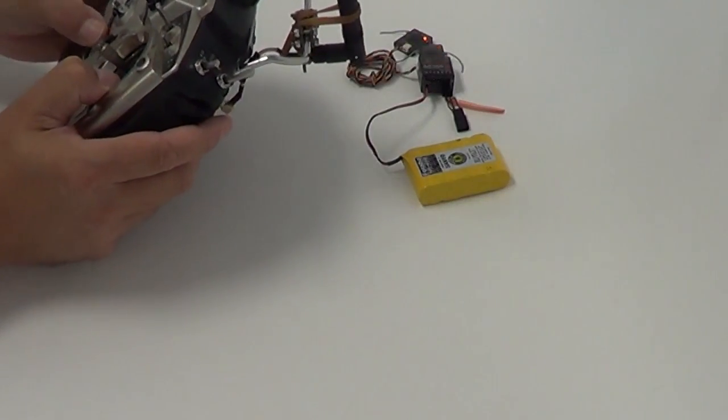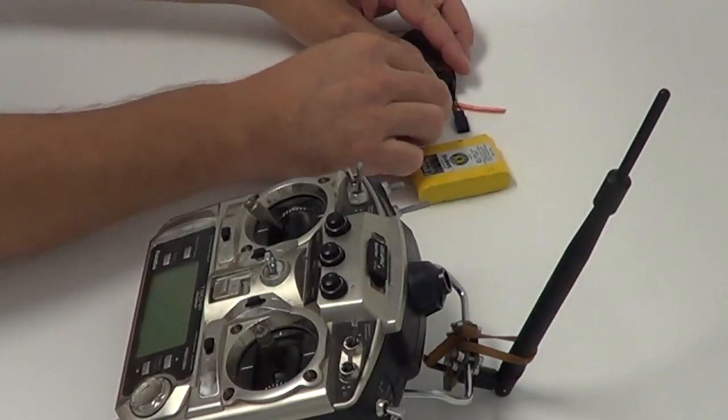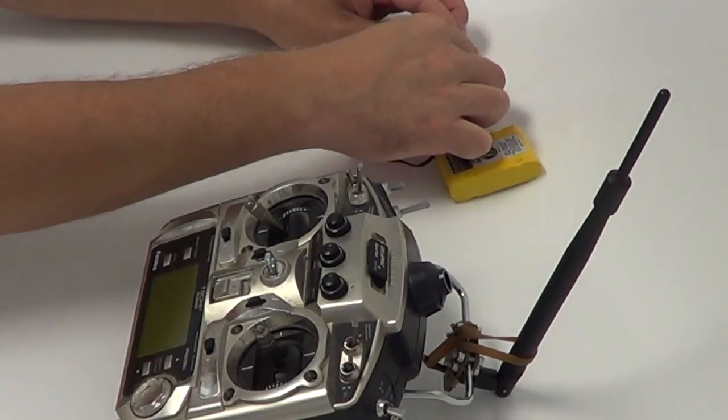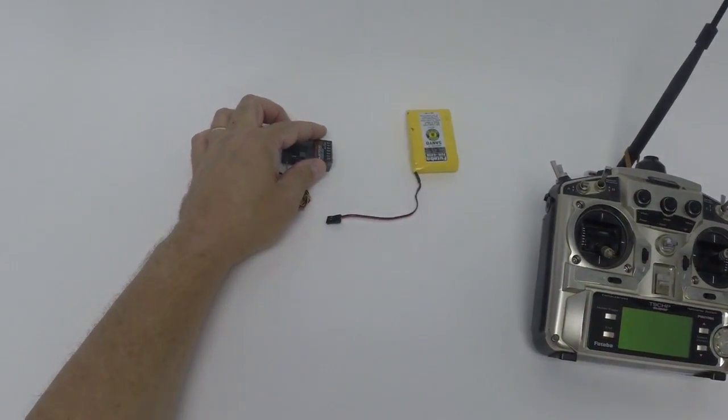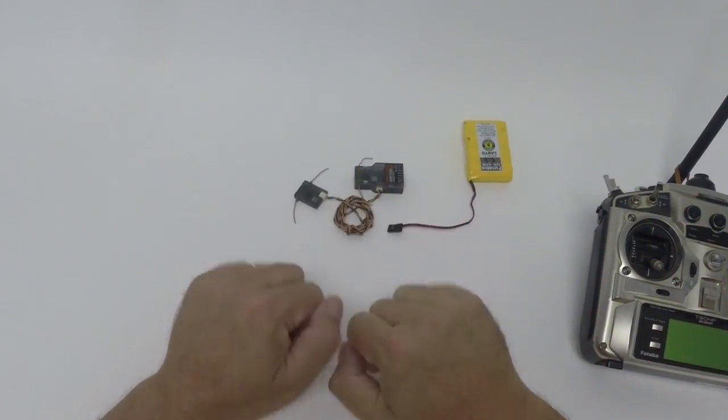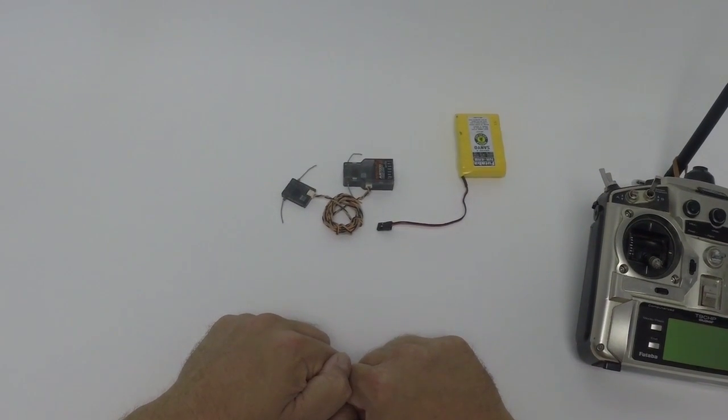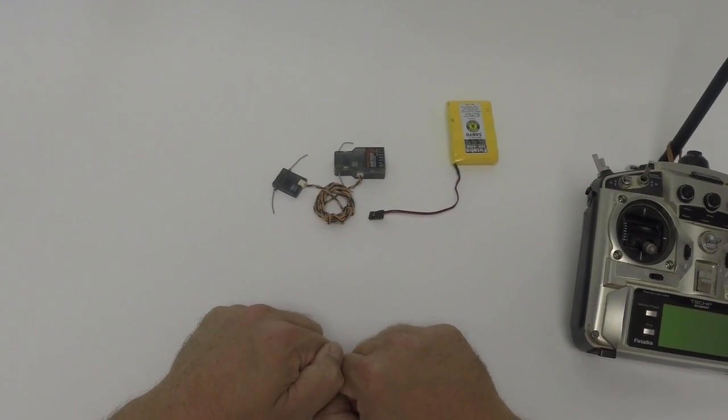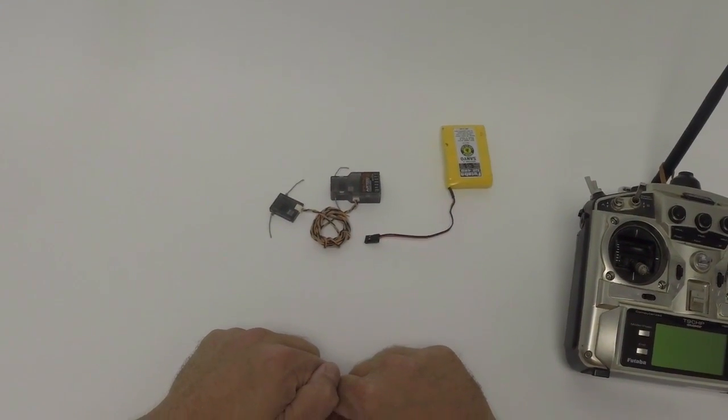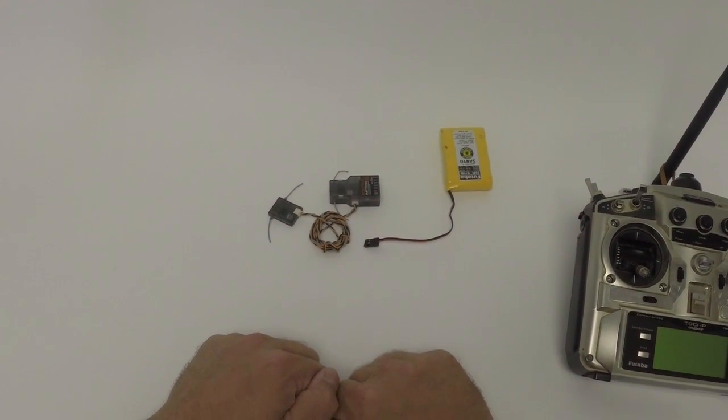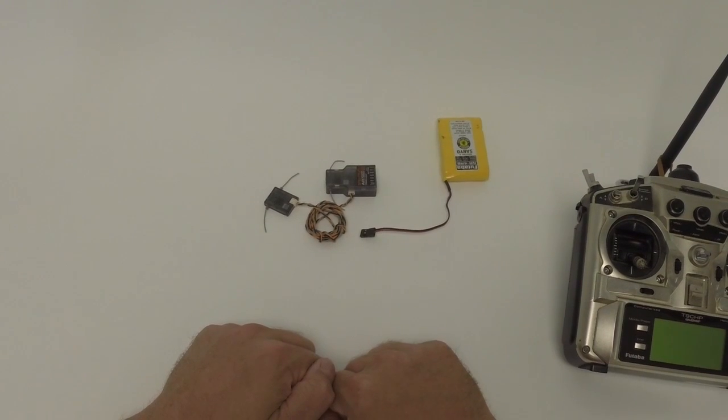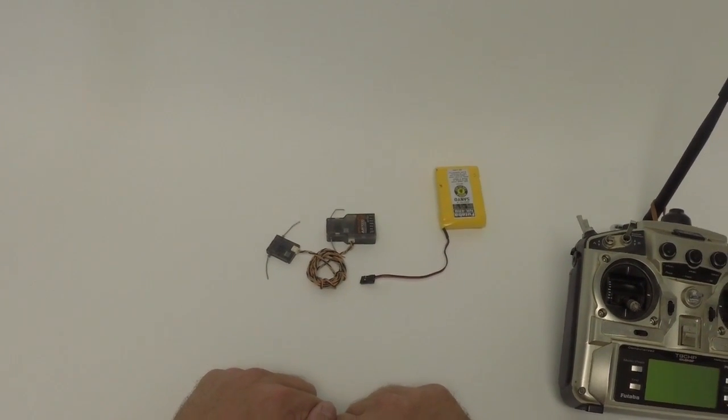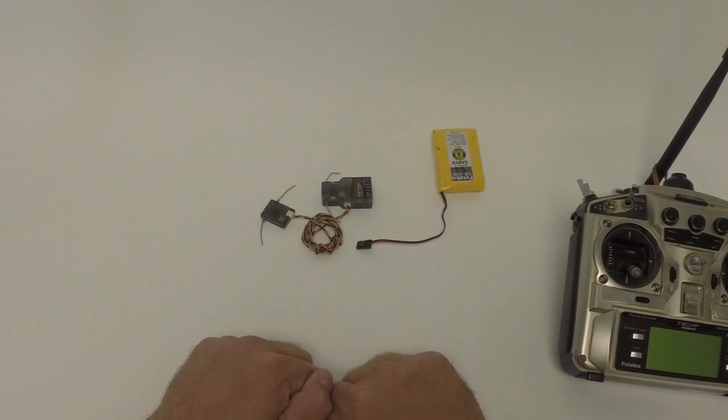At this point you power down your radio, you power down your AR7000 receiver, you remove the bind plug and you should be ready to use the Satellite Receiver. But before we go any further, we will make sure that these are properly bound together, so we will connect the servo to the receiver to verify that the binding has been completed.